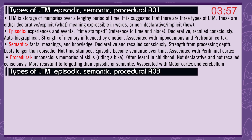Episodic memory: memories of experiences and events. They are timestamped, so have a reference to time and place. They are declarative and can be recalled consciously, and are autobiographical. The strength of the memory is influenced by the emotion felt at the time. Associated with the hippocampus and the prefrontal cortex. Semantic memory: memory for facts, meaning, and knowledge. Declarative and recalled consciously. The strength comes from the depth of processing. Lasts longer than episodic and is not timestamped. Episodic becomes semantic over time. Associated with the frontal cortex.